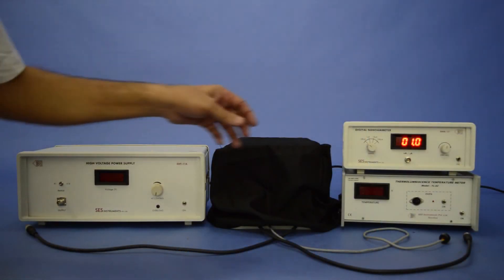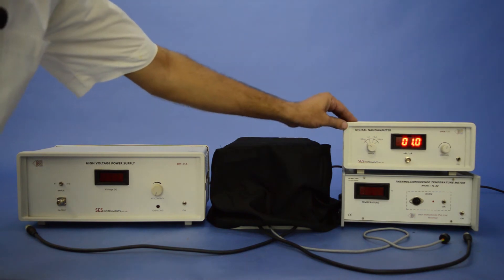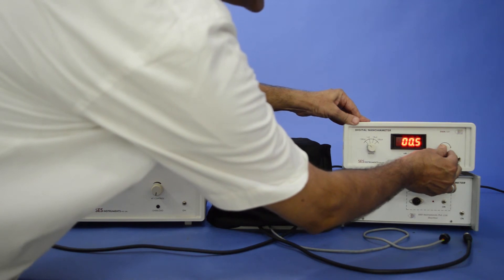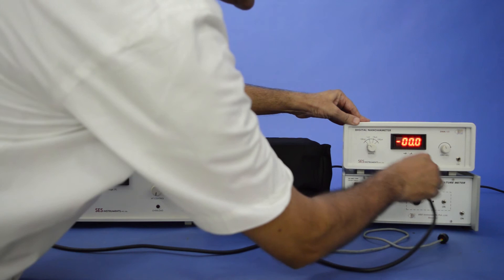Now select the 100nA range in the nanometer and adjust the zero with the help of zero adjuster and connect the lead.